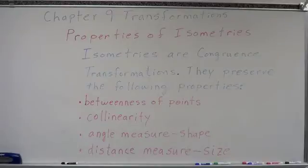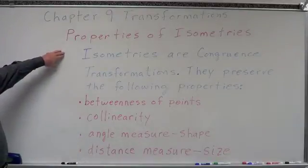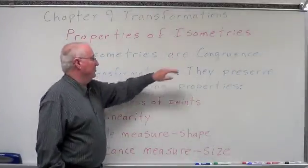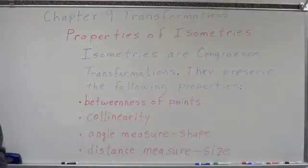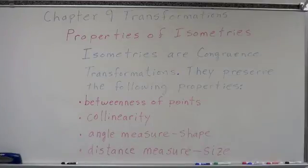It's important you understand what isometries are. Isometries are transformations that maintain congruence — they're known as congruence transformations because the pre-image is congruent to the image. The result of the transformation is congruent to what we started with. That's an important property of isometries.